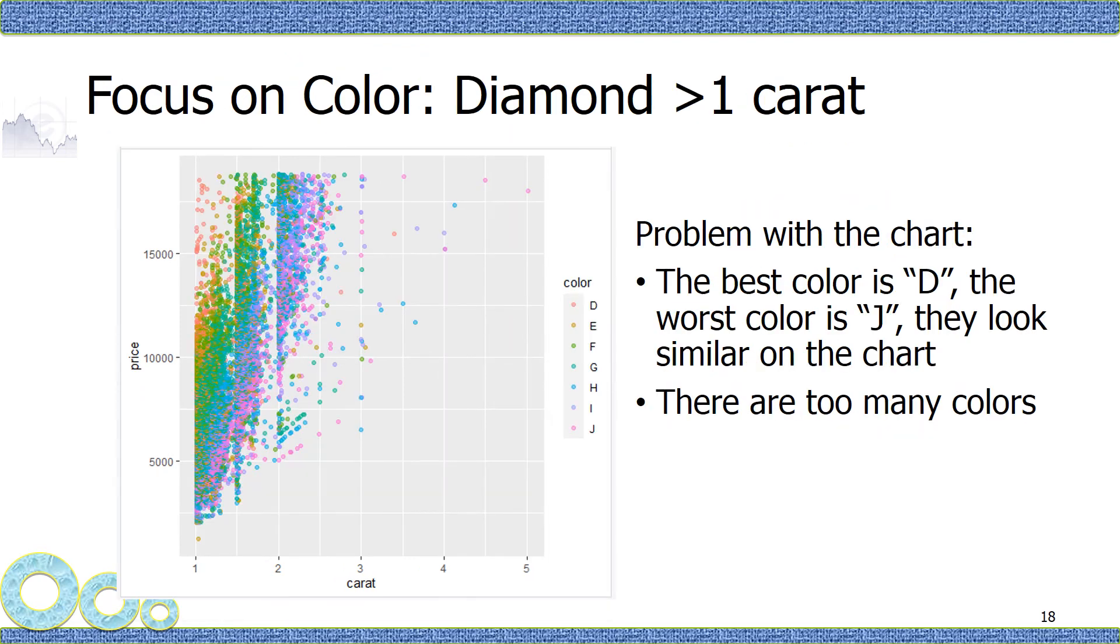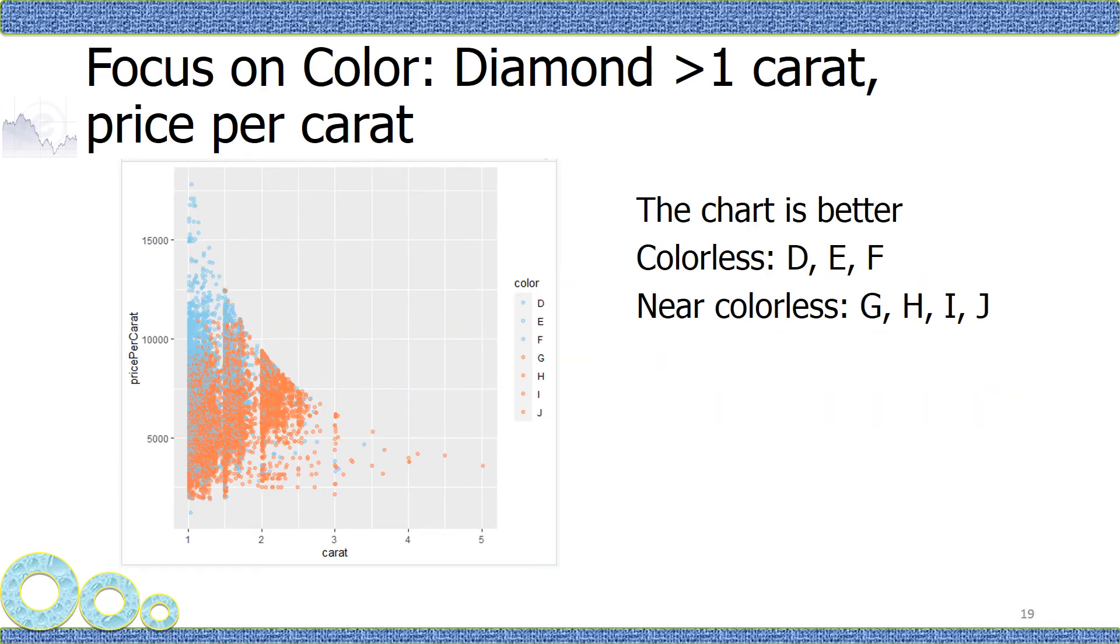Now let's talk about color. Which color grade has higher price? This one is a little bit difficult to read. So I manually assign the color to different grades.